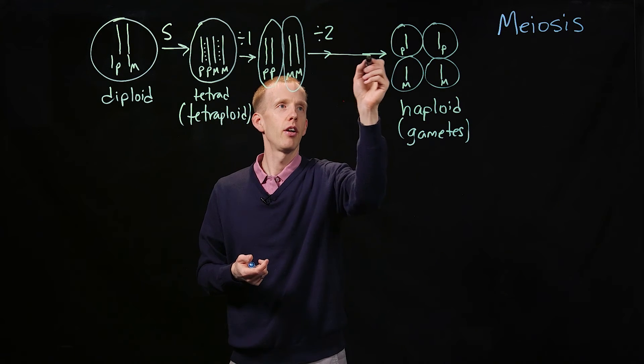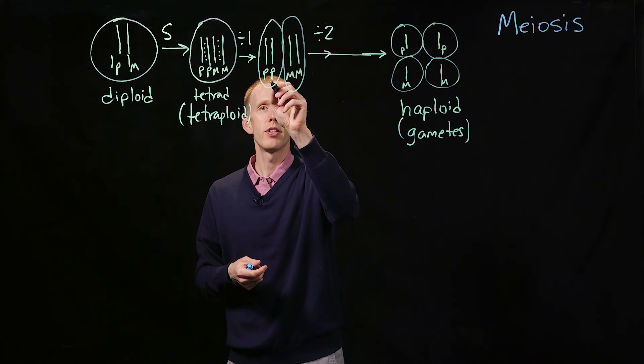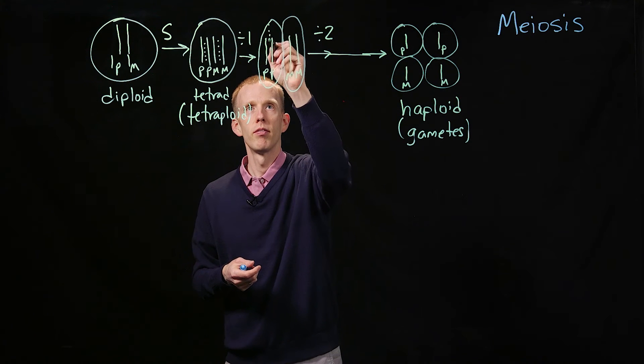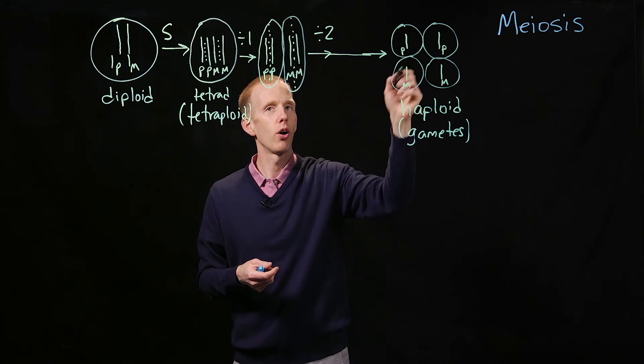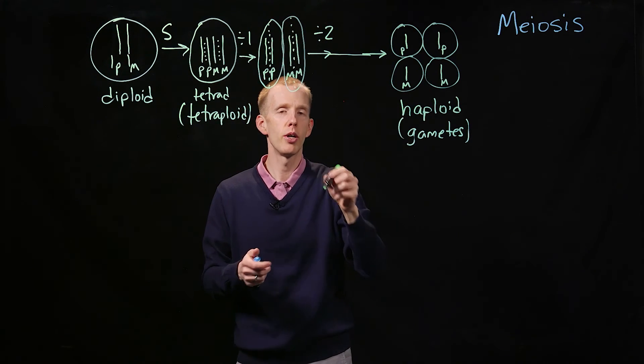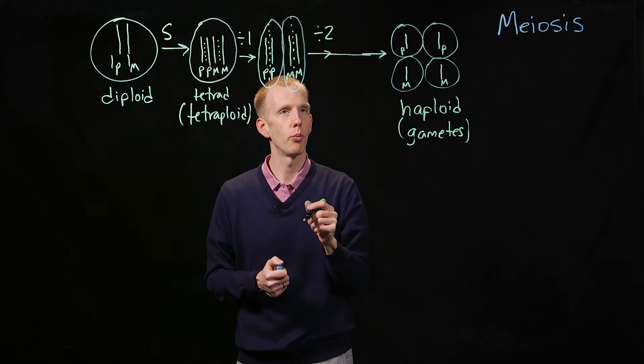The second division is where this cell will divide down the middle, and so will that cell, so we wind up getting four individual cells, each of which contain one copy of this chromosome.